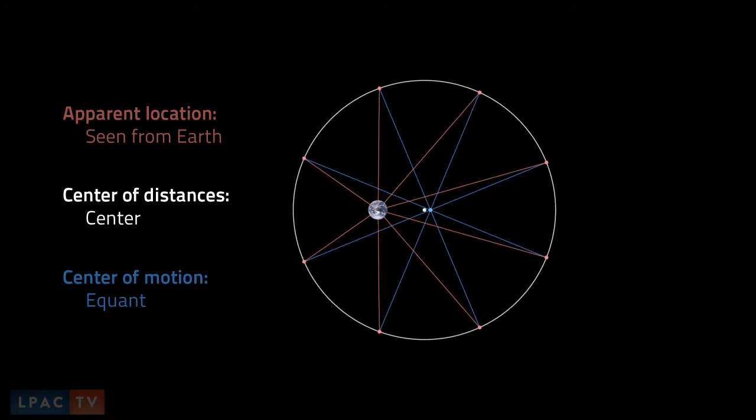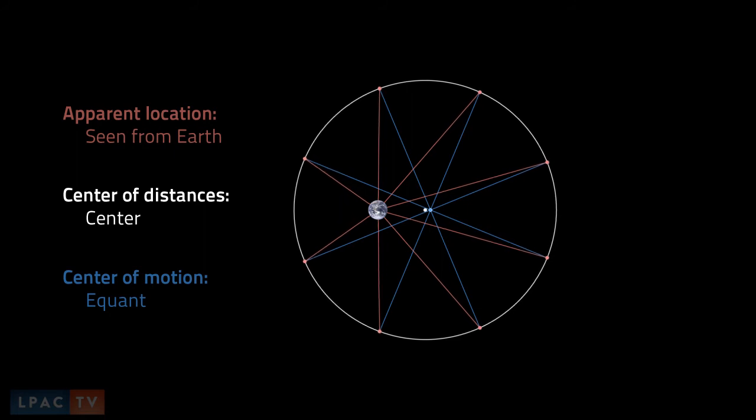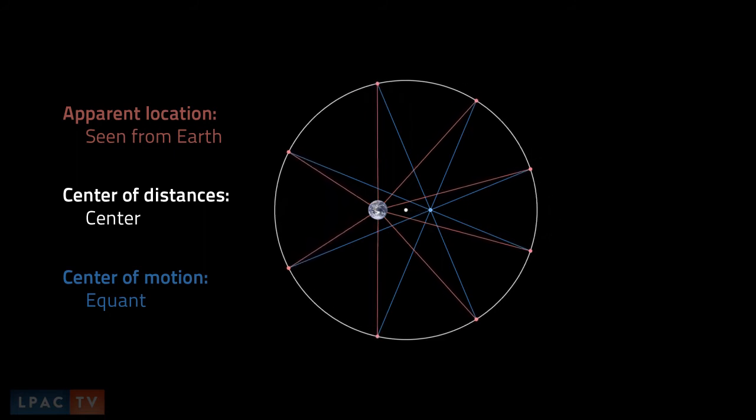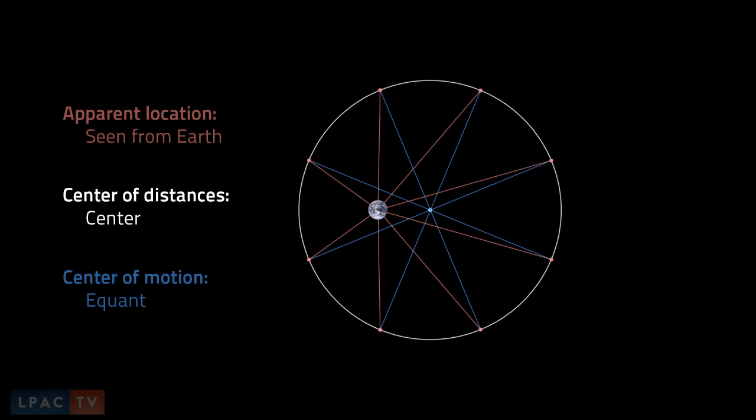Let's watch this transition a few times. The angles of the blue lines from the equant remain 45 degrees apart, but the planetary positions change as the white circle they are on moves, which then changes where they appear to be as the Earth watches them.